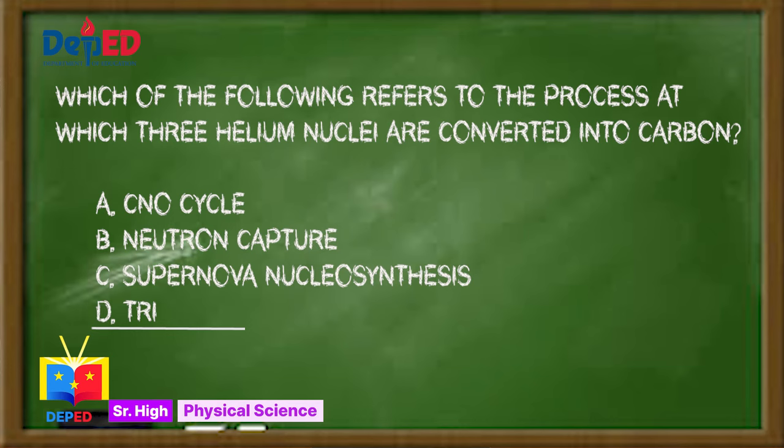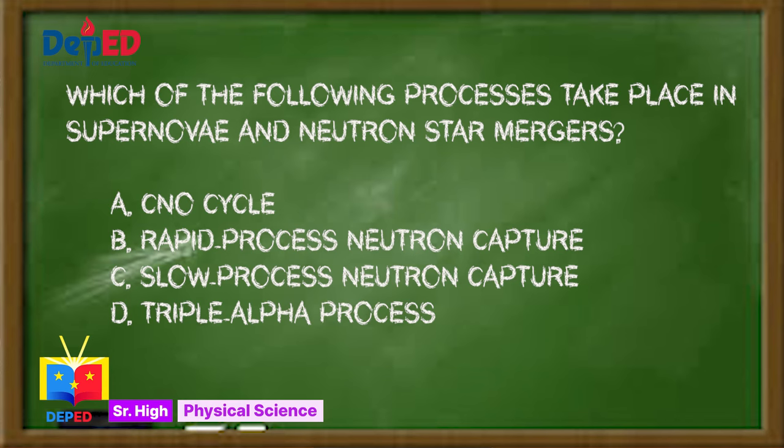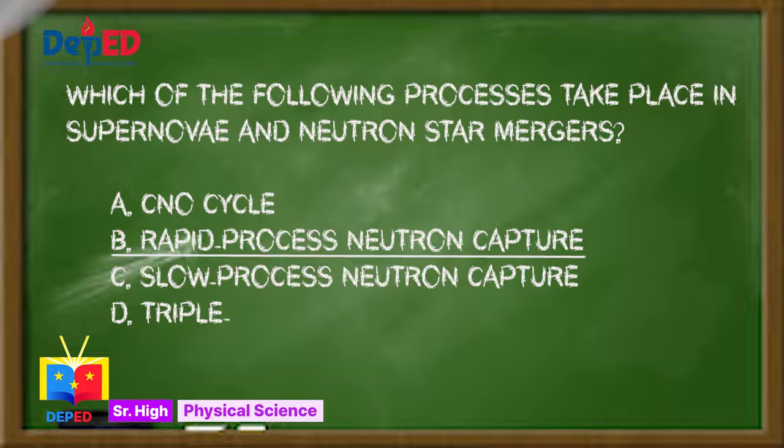Question number five: Which of the following processes takes place in supernovae and neutron star mergers? A. CNO cycle, B. Rapid process neutron capture, C. Slow process neutron capture, or D. Triple alpha process. The answer is B. Rapid process neutron capture. How did you do? Did you find the questions easy to answer? I hope you did!